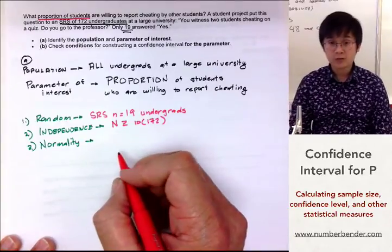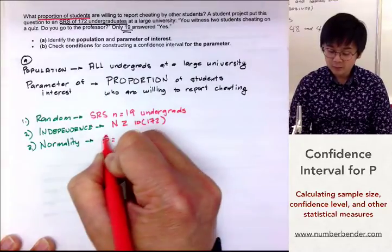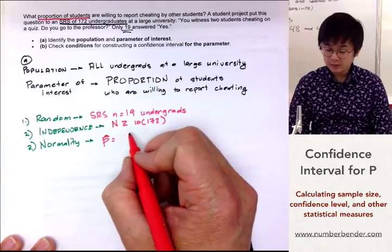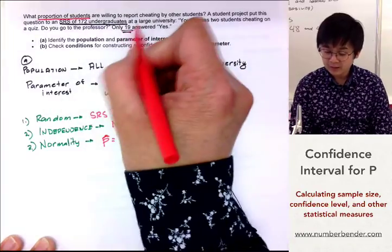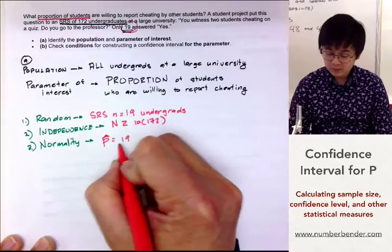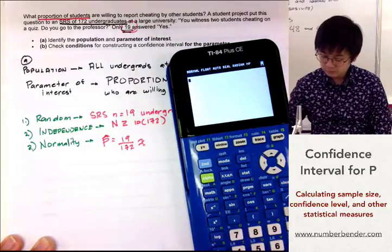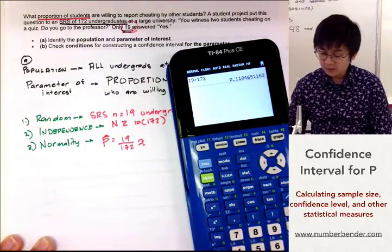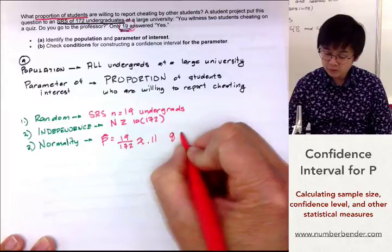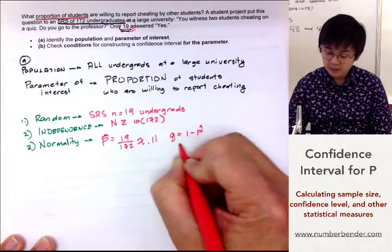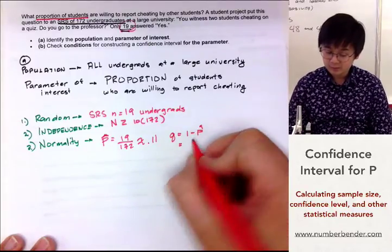Normality, however, needs a little bit of computation. We need to find p̂ first. p̂ is the proportion of undergraduates who are willing to report cheating — 19 of them answered yes out of a sample of 172. So 19 divided by 172 gives us 0.11. And q, which is 1 minus p̂, equals 1 minus 0.11, which is 0.89.